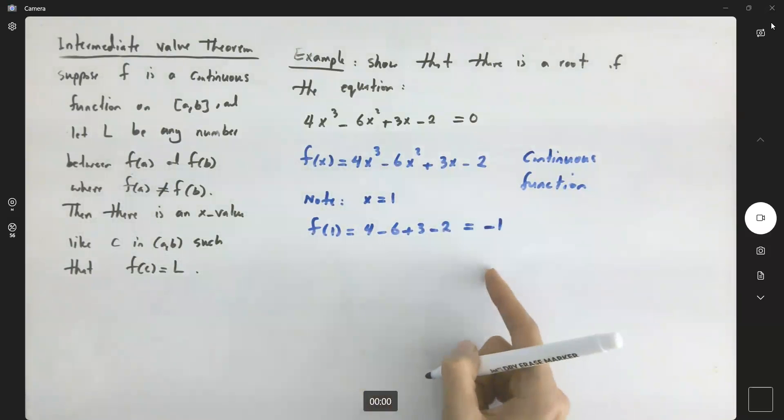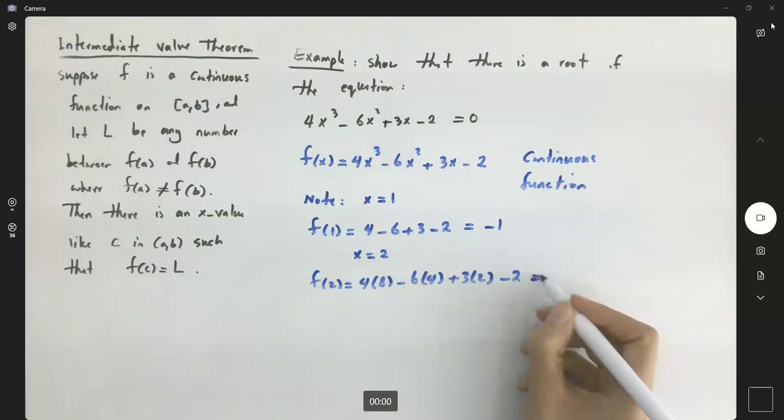So my y-value is going to be negative. And if I plug in x = 2, f(2) becomes 4(8) - 6(4) + 3(2) - 2. This is going to equal 12, which is a positive value.